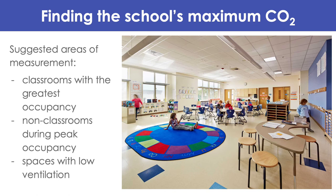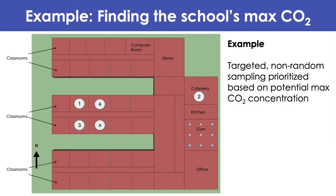For finding the school's maximum CO2, there are suggested areas of measurement. We can think back to the sources of high CO2 — people and low ventilation rates. The best practice is to use targeted non-random sampling prioritized based on potential maximum CO2 concentration. You can think of the cafeteria during peak hours where all students crowd in for lunch, or places with particularly low ventilation rates and a high number of students.